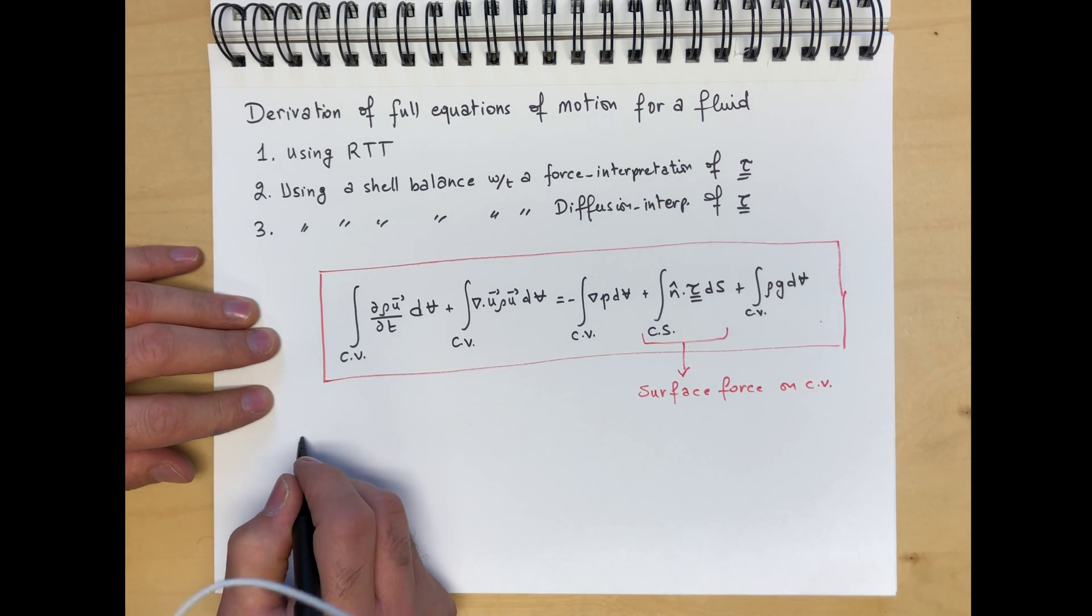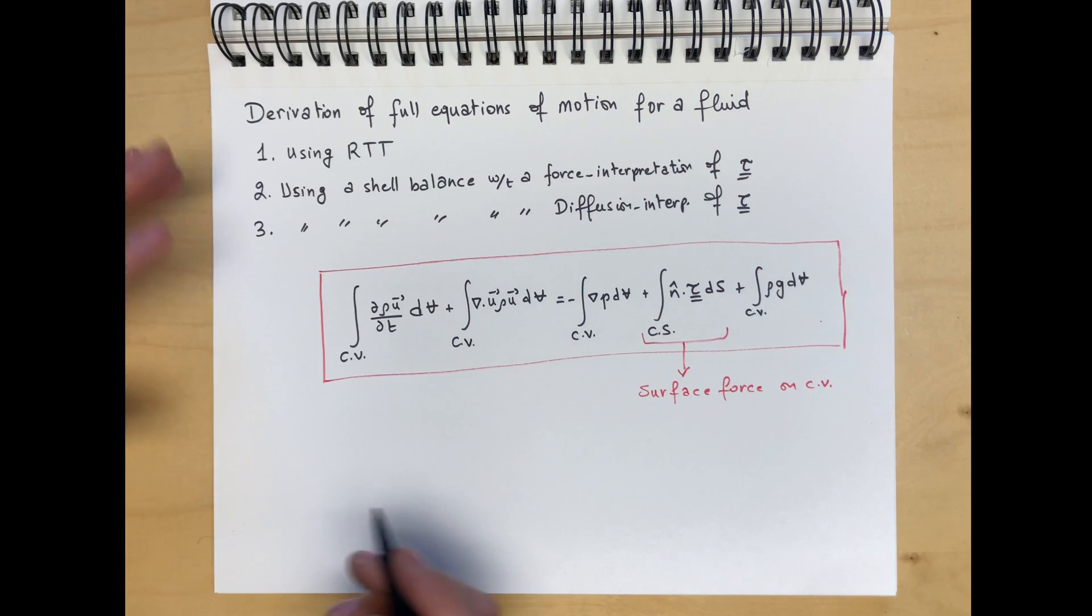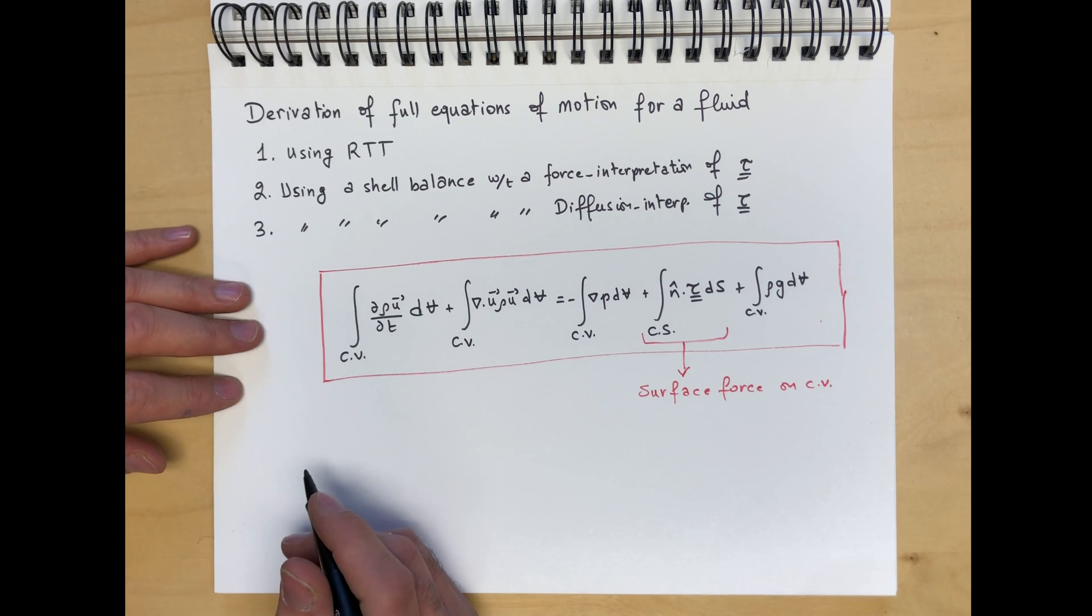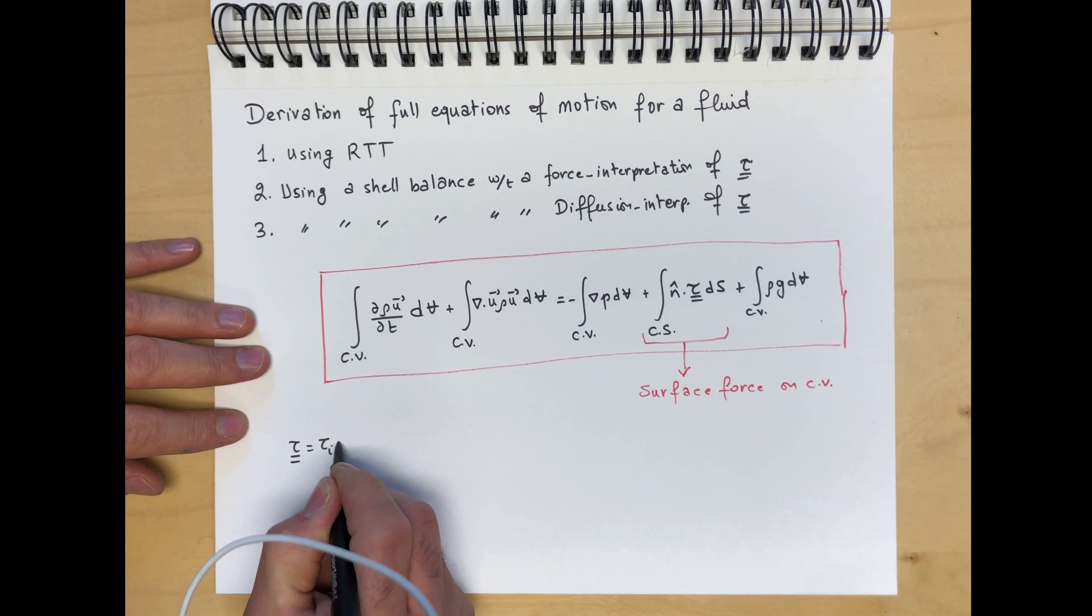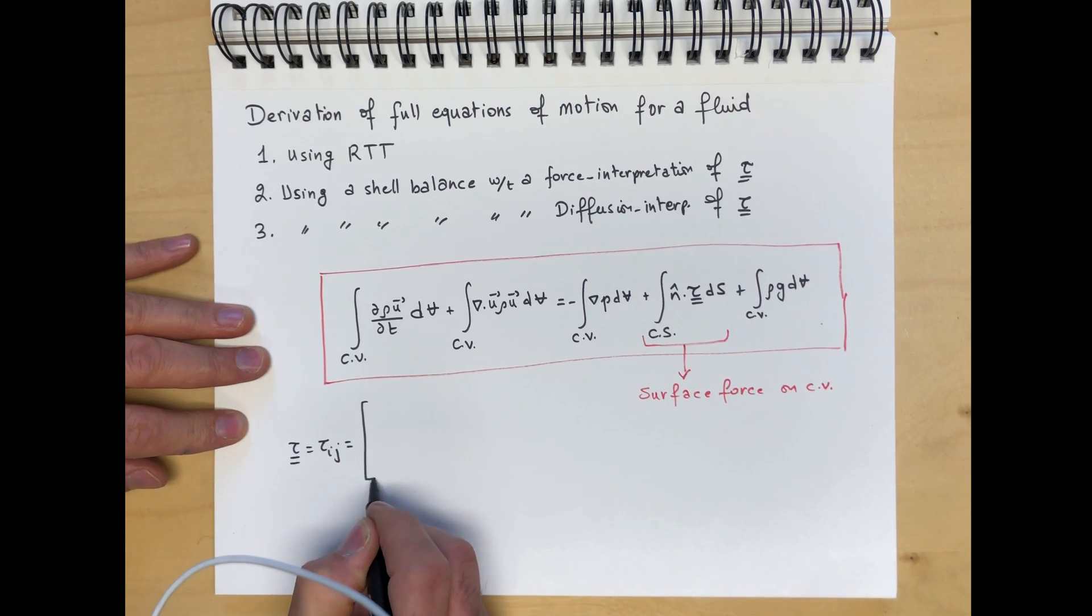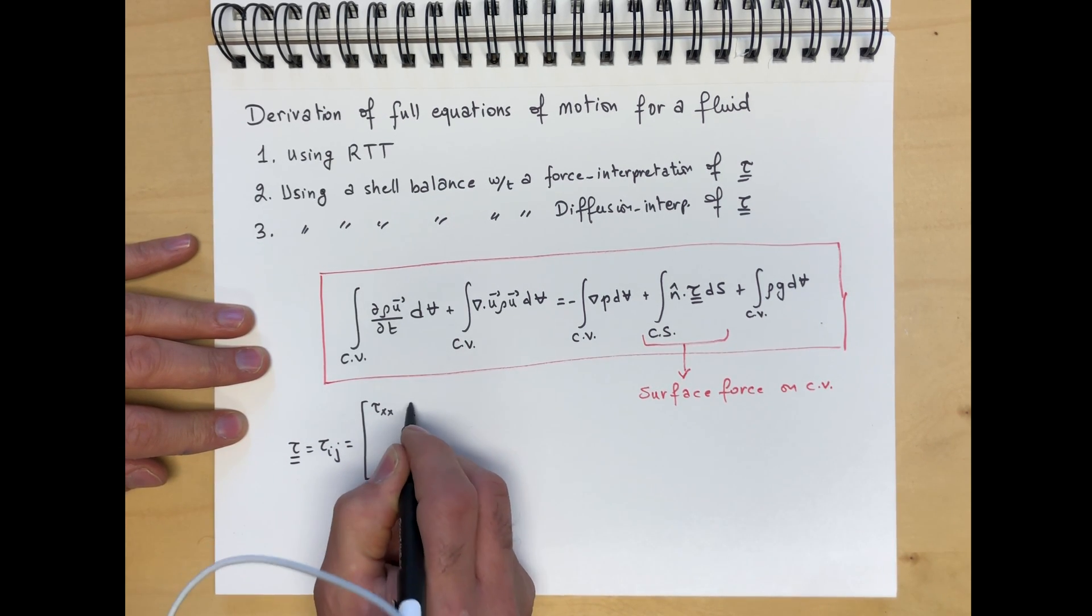The stress tensor describes the state of forces on a fluid, at a point, on a fluid element in this case. We write it as tau ij.